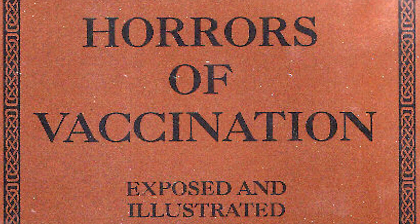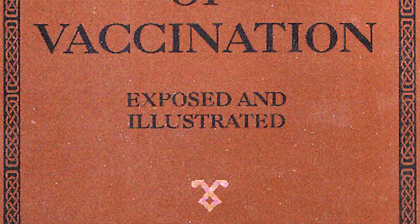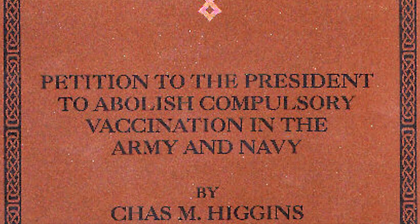Going back to 1918, we have a really important exposé written by a man named Charles Higgins back in the year 1920, where he explains completely how the 1918 virus came to be and the etymology — the beginning study of where it came from. Let me just share with you page 26 of this book called The Horrors of Vaccination.